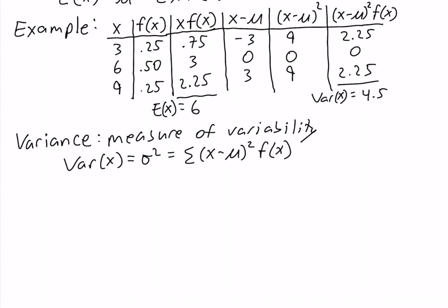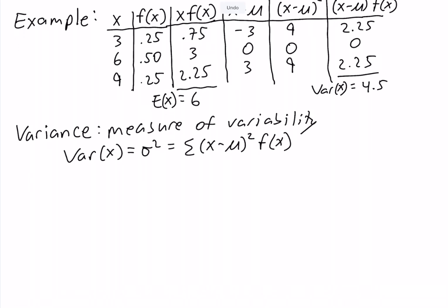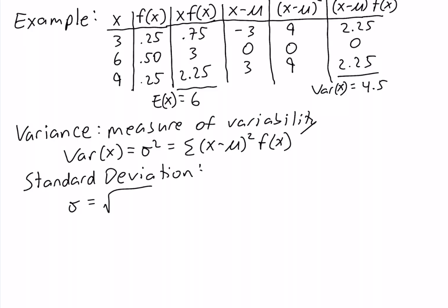The standard deviation is just the square root of the variance. Like the variance, it's a measure of variability, but the benefit of the standard deviation is that it's in the same units as our random variable x. So to calculate the standard deviation, we simply take the square root of 4.5, which is equal to approximately 2.12.